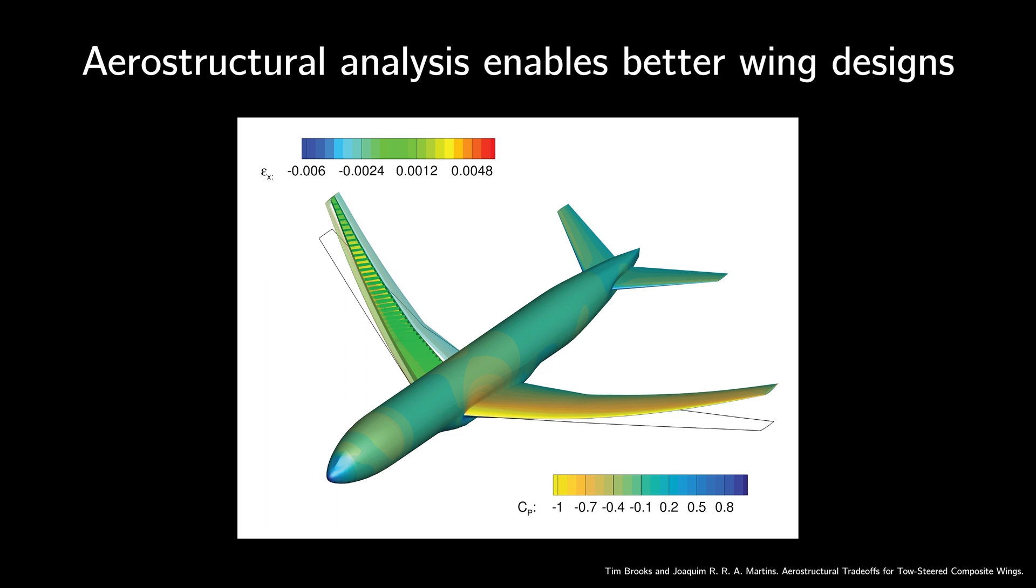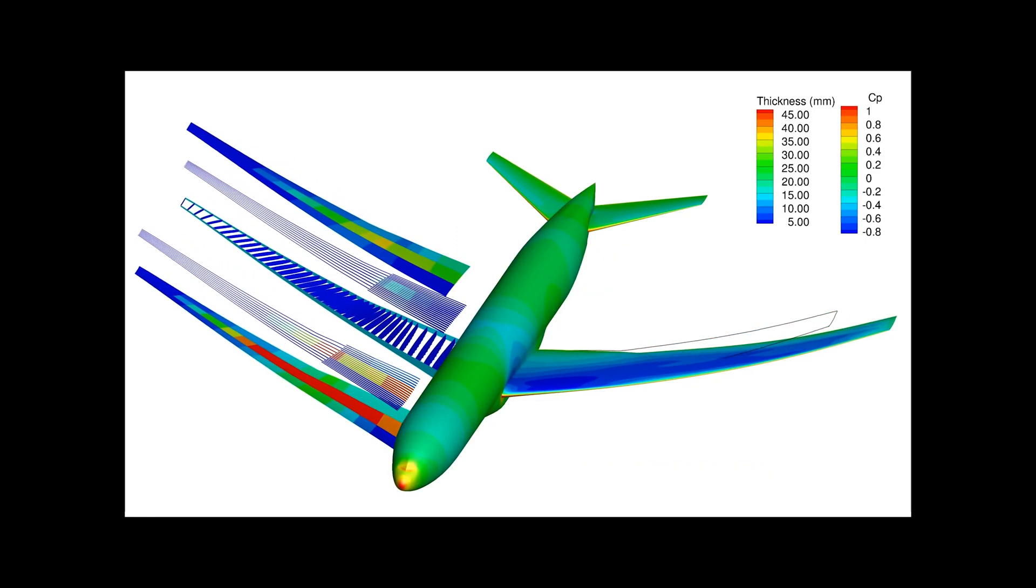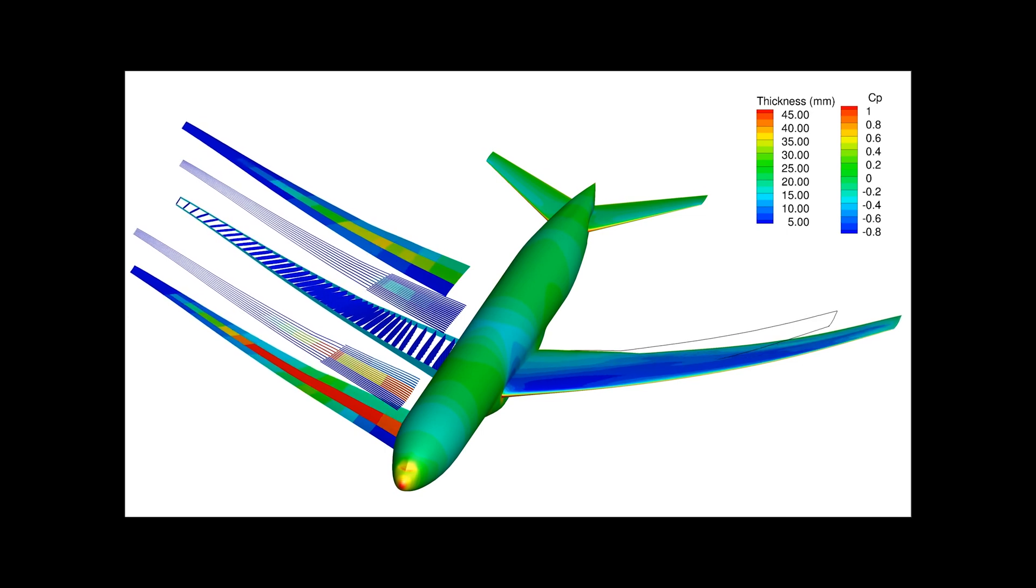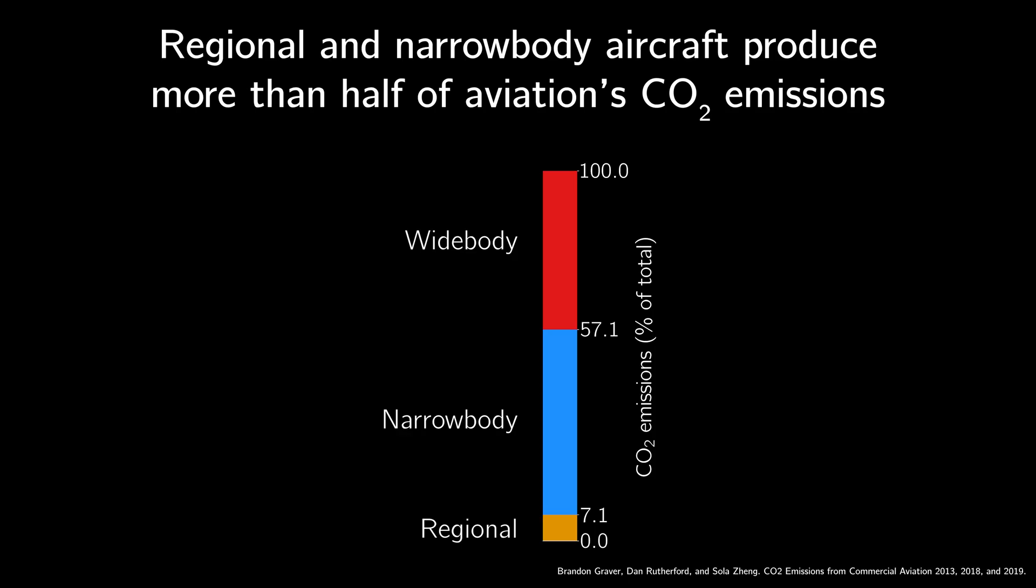Being able to analyze the interaction between the aerodynamic and structural performance of an aircraft wing is integral to aircraft design. It enables aircraft designers to develop wings that strike the best balance of low structural weight and high aerodynamic performance. We can take advantage of this aerostructural analysis to simultaneously optimize the wing's shape and wing box structure. This video shows one of those optimizations. The goal of these optimizations is to minimize fuel burn. Most of the aerostructural optimizations in the past are of widebody-sized aircraft. Narrowbody and regional aircraft make up more than half of aviation's global carbon dioxide emissions. Therefore, we need tools that can perform aerostructural optimization on these aircraft to minimize aviation's climate impact.